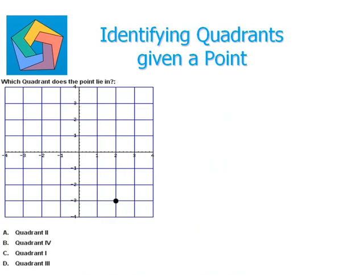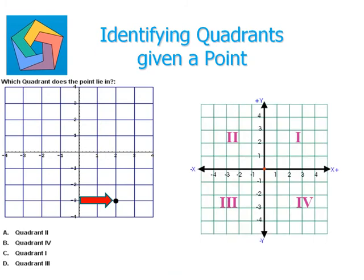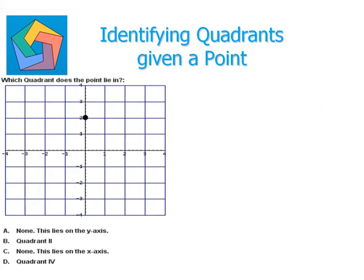Now let's solve some examples. Which quadrant does the point lie in? Looking at the coordinate plane with its first, second, third, and fourth quadrants, we see that this point lies in the fourth quadrant. So the correct option is option B — Quadrant 4.